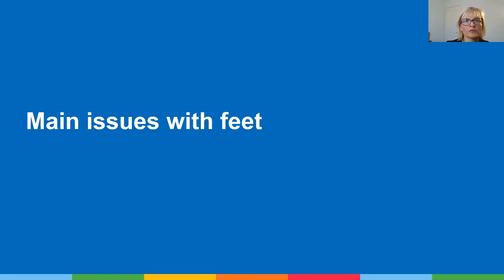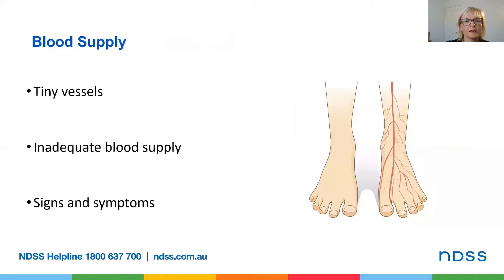Let's look at some of the main issues with feet. Firstly, poor circulation, otherwise known as peripheral vascular disease. The blood vessels that go to your feet are very, very small. A complication of diabetes can cause a reduced blood supply or even a blockage of these tiny vessels. The decreased blood flow means that less oxygen and nutrients are delivered to your feet. Signs and symptoms of circulation issues include sharp leg cramps even after walking short distances, pain in your feet even while resting, cold feet, feet which are a reddish-blue colour, and cuts that are slow to heal. If you develop any of these signs or symptoms, see your GP or podiatrist for advice.